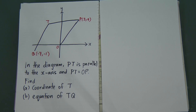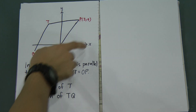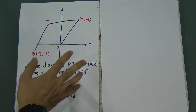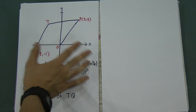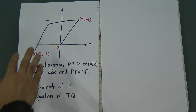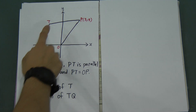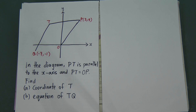This is another question for straight line, but this question will be a little bit more difficult than the usual questions you would have in past years. It's only just a little bit more difficult, don't worry. Now, this diagram is a little bit ugly because I drew it myself, but all the features are still the same. PT is parallel with the x-axis, so you just assume PT is parallel with the x-axis.